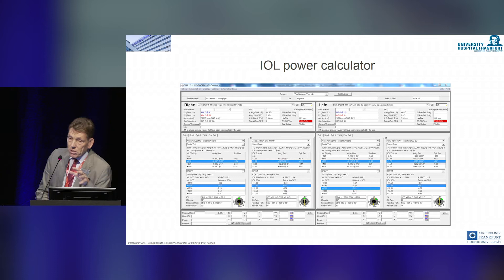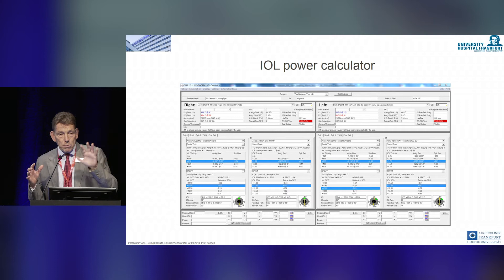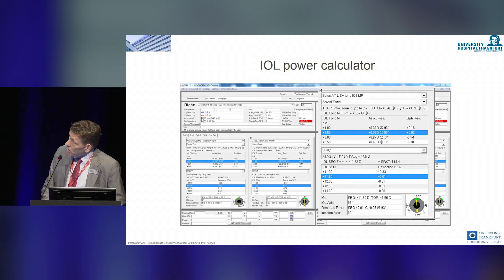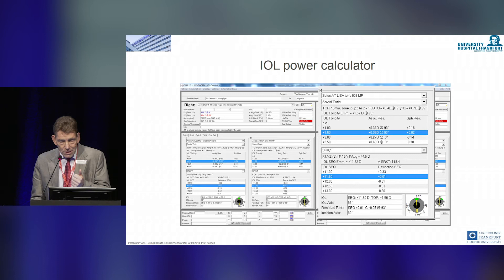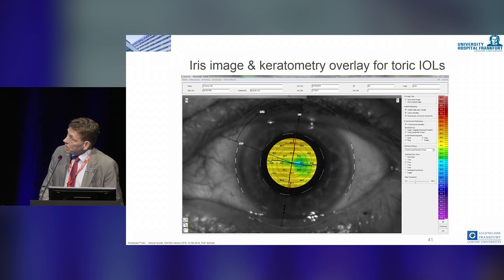IOL calculation is logical once you have a device that can take anterior and posterior measurements and axial length — you have everything in one device, and Oculus has done this. Using a calculator such as the Savini Toric calculator, you come up directly with an IOL that gives you both the spherical power and the power of the toricity. This is shown in the IOL printout presented here.